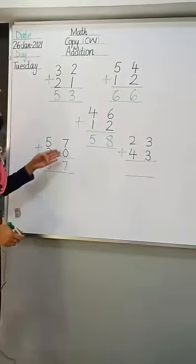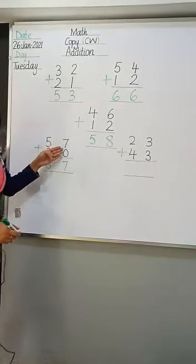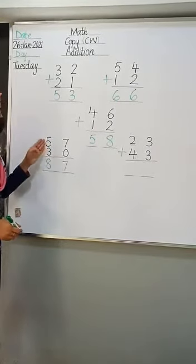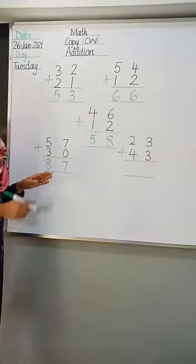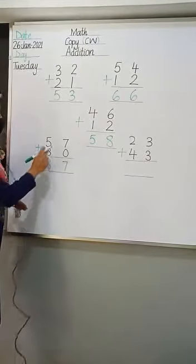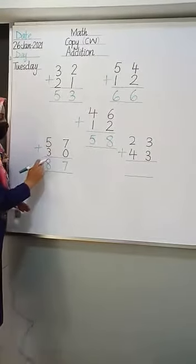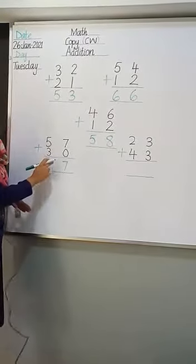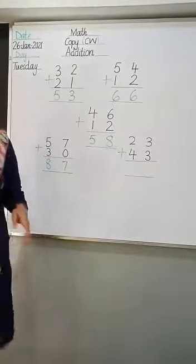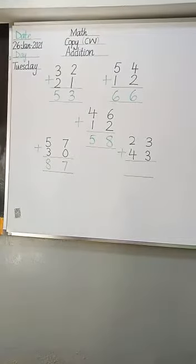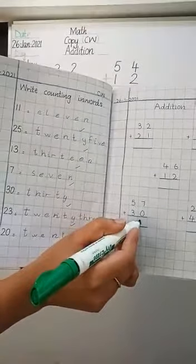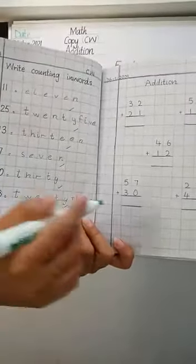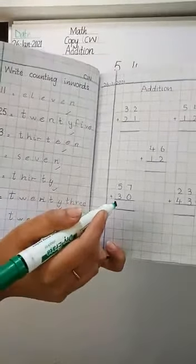Seven plus zero is seven. Five plus three is eight. We can also read this as fifty-seven plus thirty is eighty-seven. Write the answer in your copy. Seven plus zero is seven, five plus three is eight.